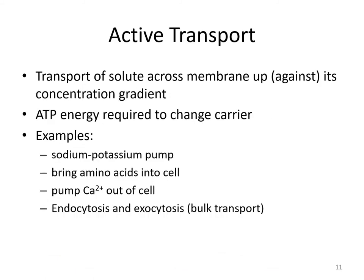Active transport is transport of solute across a membrane up the concentration gradient — against the concentration gradient. We're using energy to move a solute from where it's less concentrated to where it's already more concentrated, which is against what nature naturally seeks. ATP energy is required to change a carrier protein to allow for this to happen. Examples include the sodium-potassium pump, bringing amino acids into cells, pumping calcium ions out of the cell, and endocytosis and exocytosis — both forms of bulk transport.